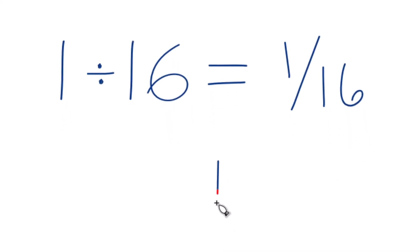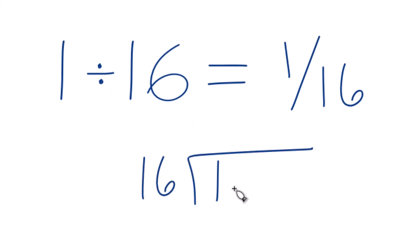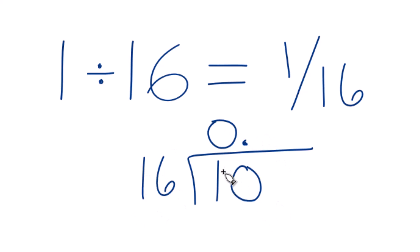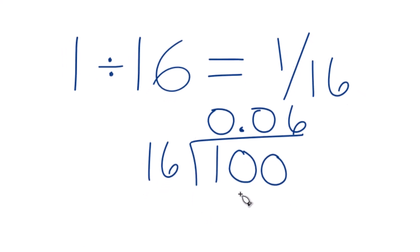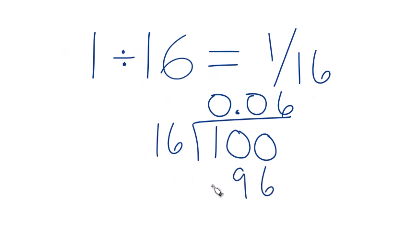We take 1 and want to know how many times 16 goes into 1. 16 doesn't go into 1, so I'll call it 10 and put a 0 with a decimal point here. 16 doesn't go into 10 either, so let's call it 100 and add another 0. It turns out 6 times 16 is 96, so we do that, subtract, and we get 4.